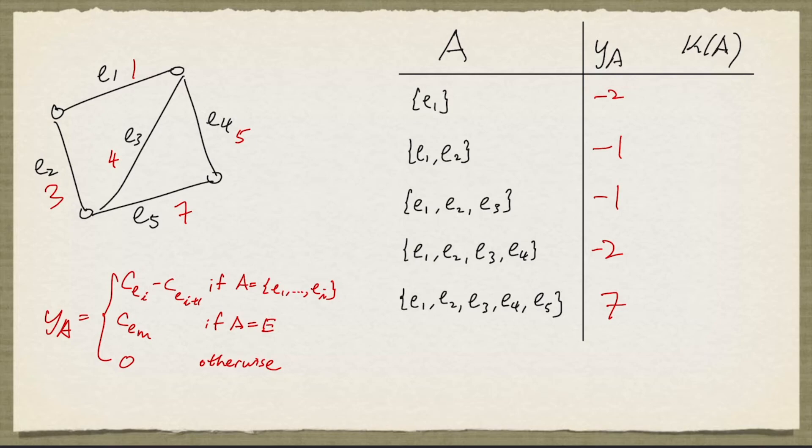We are now going to work out the objective function value of this dual solution. And for that, we need to know kappa of a. So if you take the edge e1, the graph with the full node set and just the edge e1, we have 3 components. So this is 3.